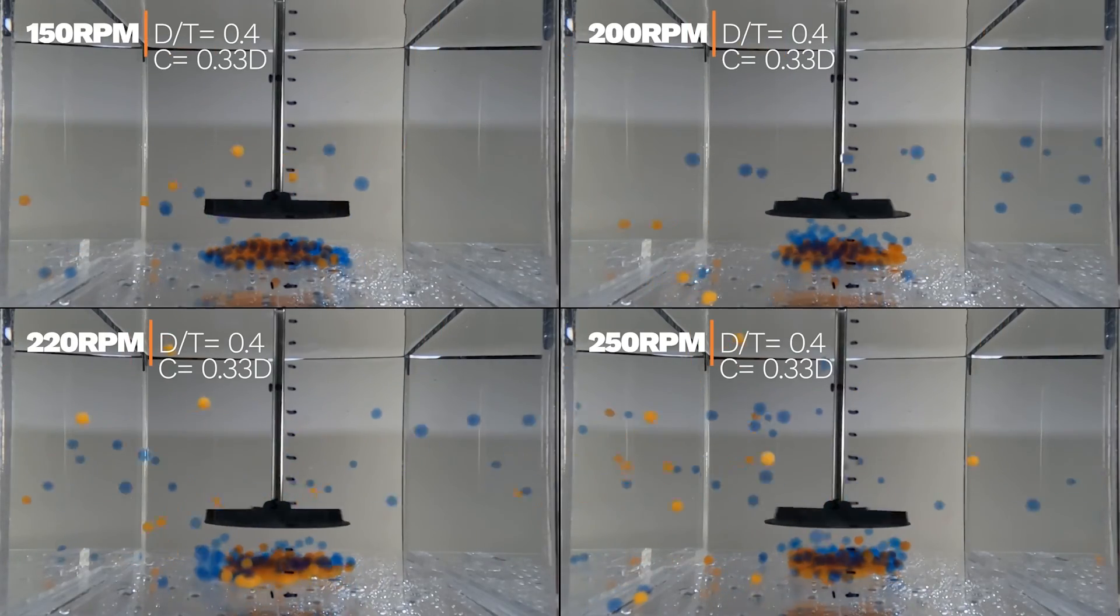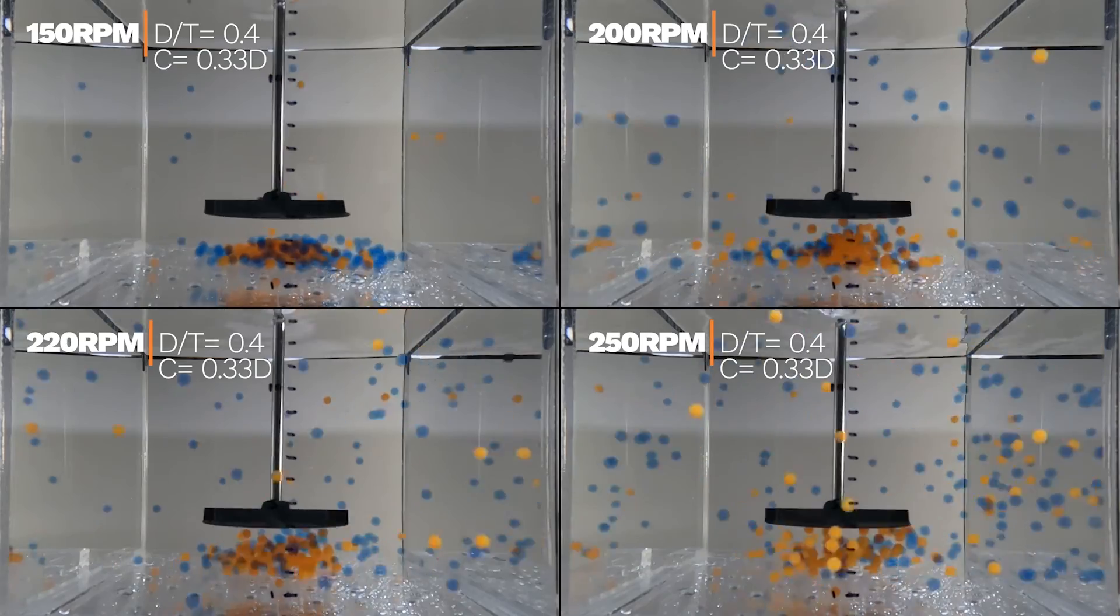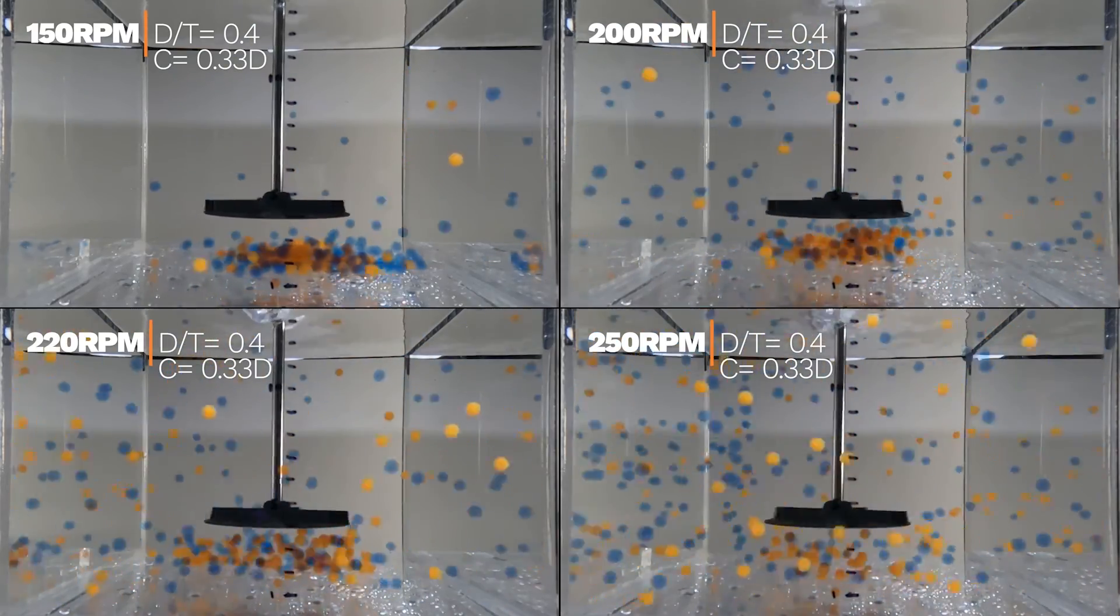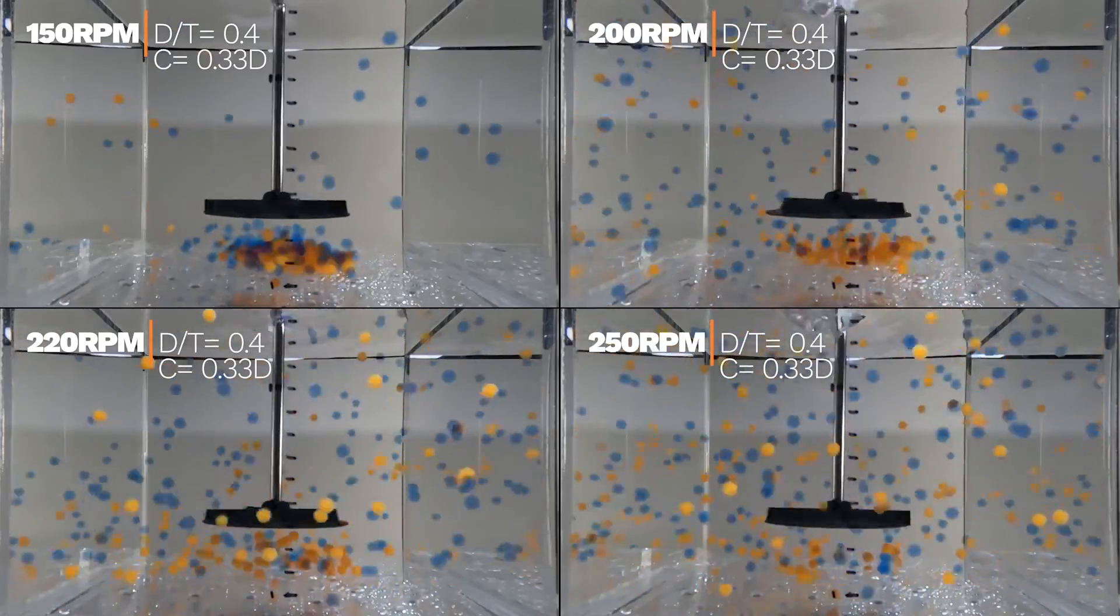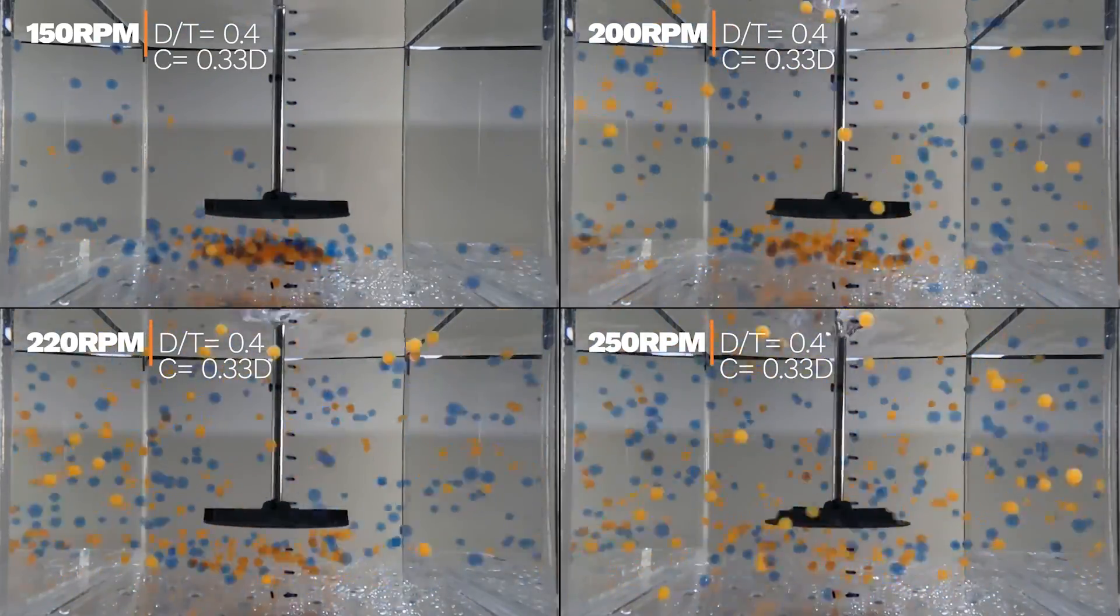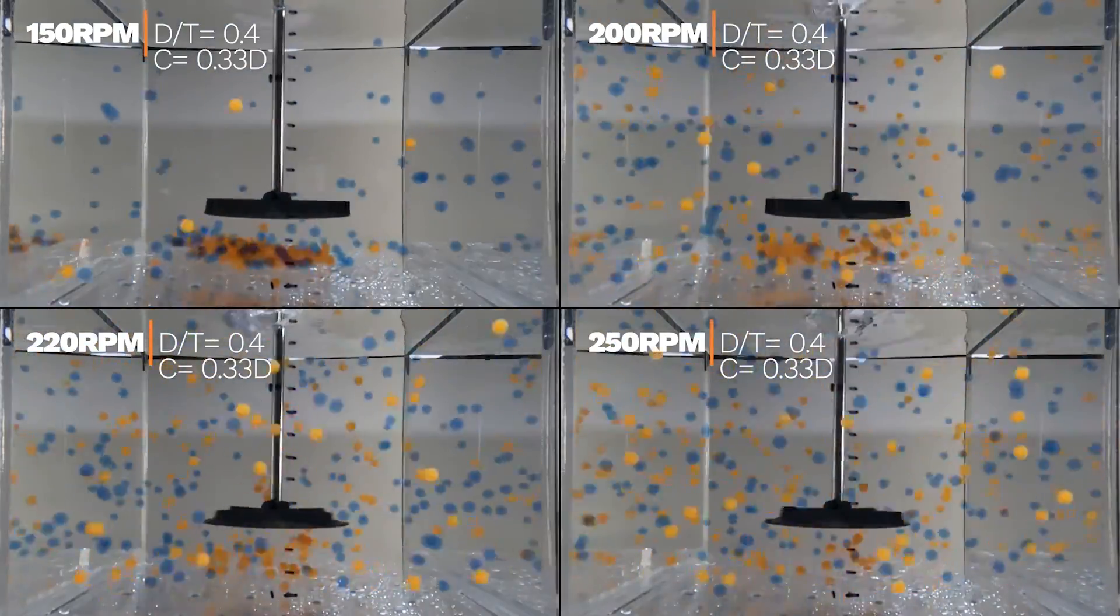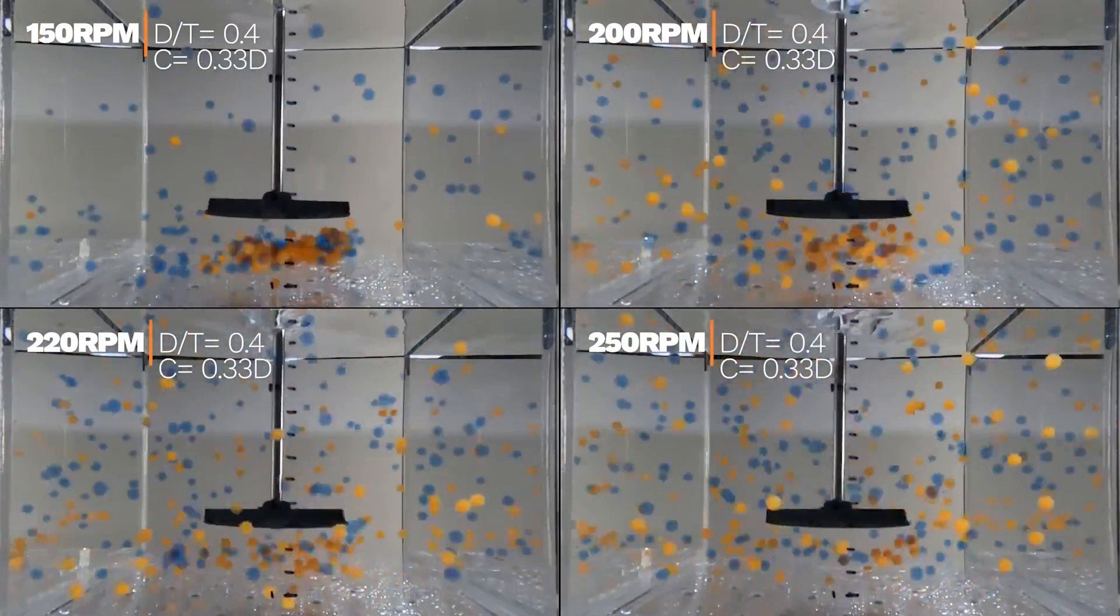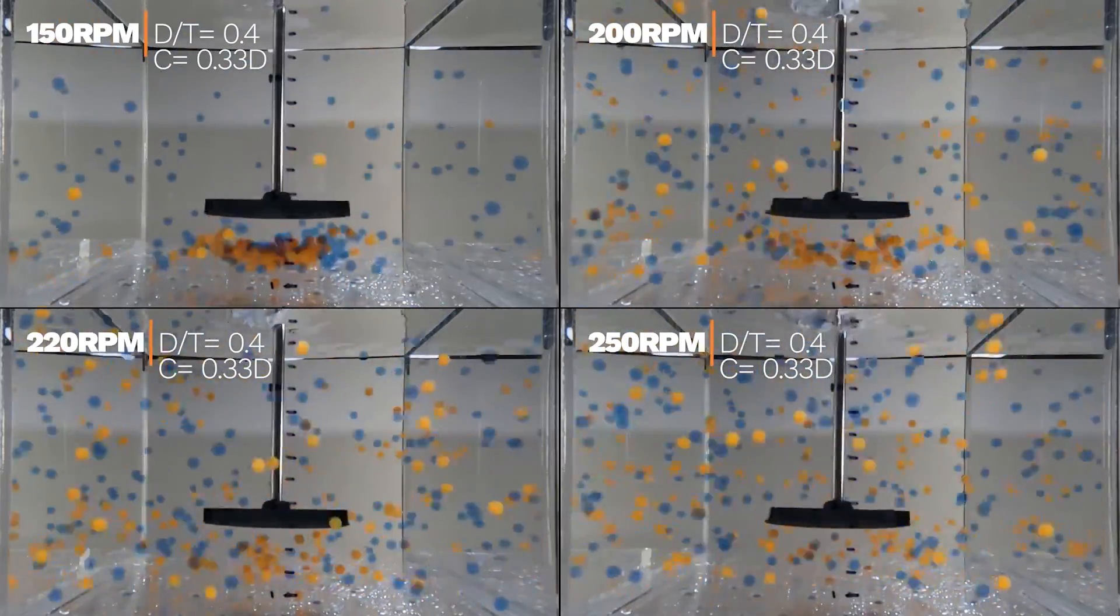By raising the agitator from the tank bottom, fluid dynamics changes drastically. Typically, we express the position of the impeller as a fraction of its diameter from the tank bottom. In this case, we test one-third its diameter from the bottom as well as three-quarters. Notice the change in turbulence of the interface as we raise the agitator. Also notice the accumulation of solids on the tank bottom.